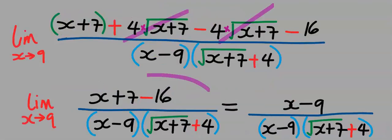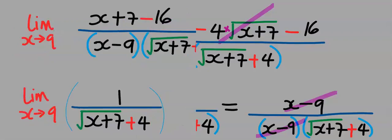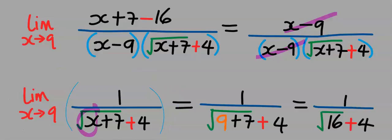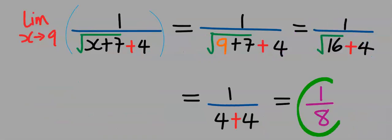Next, we are left with this function. We take the limit of the remaining function. That is, whenever I see x, I will now input 9. And 9 plus 7 will give you 16, and our answer is 1 over 8.